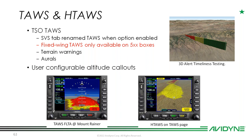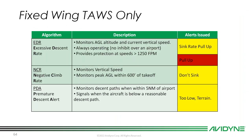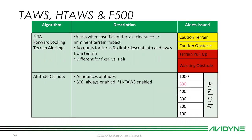For folks with operational requirements for TAWS, or who just want it, they can get all those TAWS features. FLTA is still there for everybody else. TAWS will give you terrain warnings, orals, and user-configurable callouts. A couple other HTAWS messages are available. For fixed-wing TAWS features: excessive descent rate, negative climb rate, and premature descent alerts are all available, with oral alerting as well.